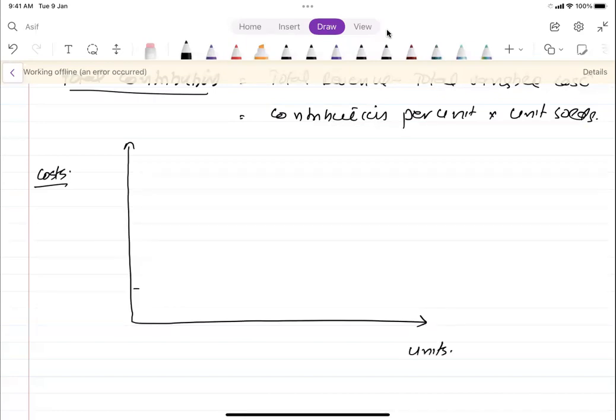A straight horizontal line is called fixed cost. This cost does not change with units of production. Whether units are 100, 200, or 300, the fixed cost line remains horizontal.